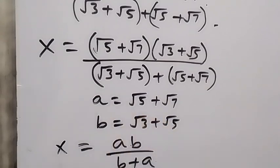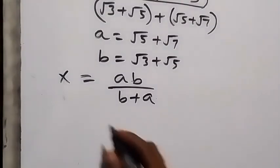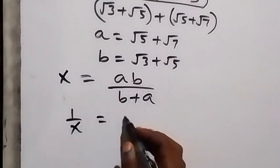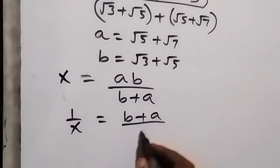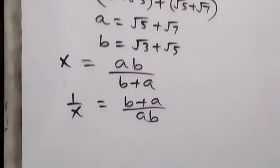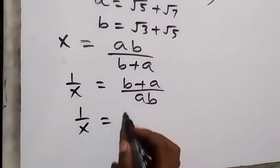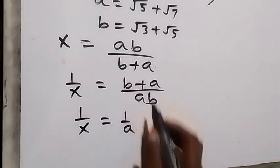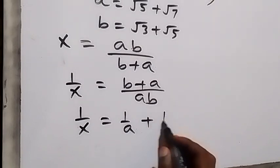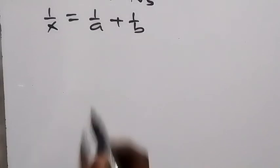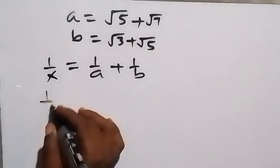In terms of a and b, x equals a·b divided by b + a. When we take the reciprocal on both sides, we have 1/x equals (b + a) over a·b. When we separate this into two fractions, 1/x equals 1/a plus 1/b. From here we can substitute the values of a and b.